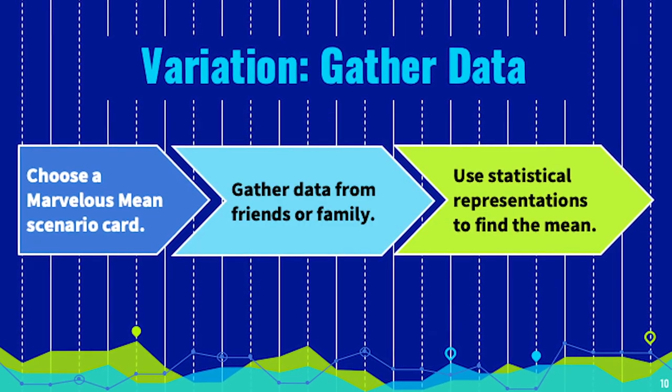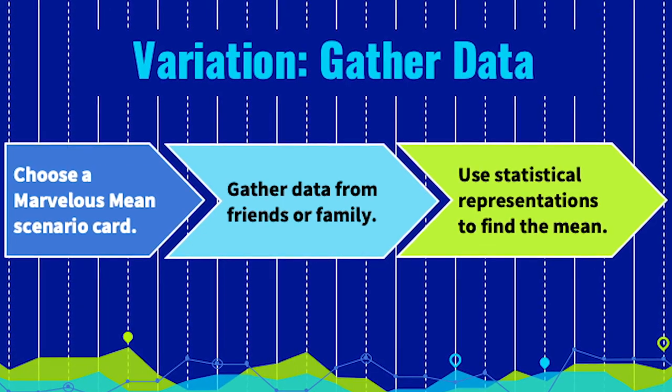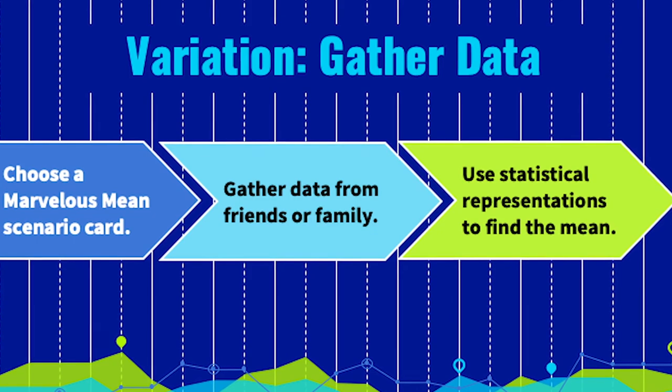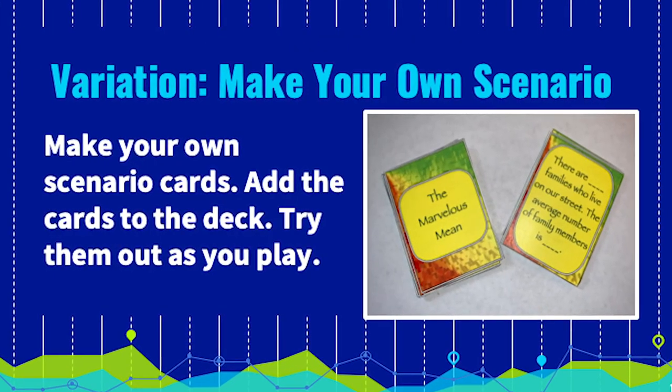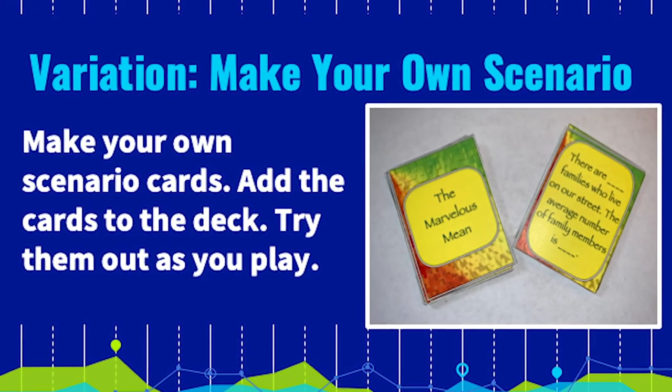There are a couple of variations for this game. One variation is for players to pick a scenario game card, gather data from friends or family, then use representations to find the mean. Another variation has players make their own scenario cards, then add them to the deck. Try them out as you play.